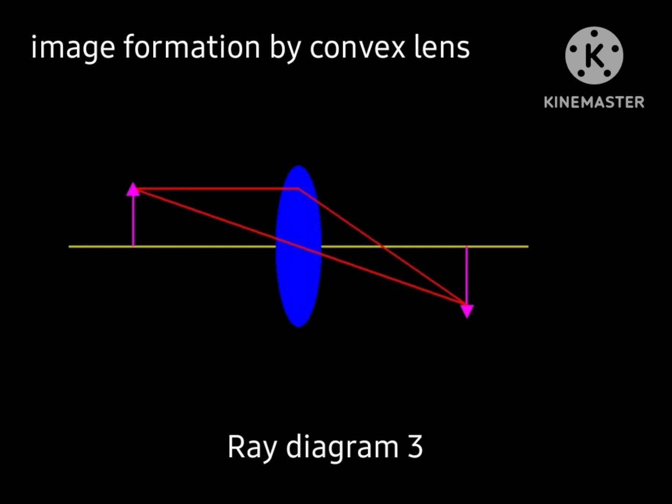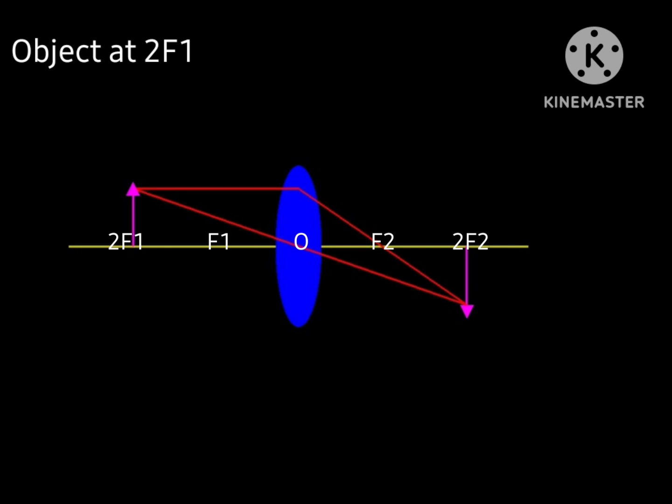In the third ray diagram we are going to discuss, the object is at 2F1. If the object is at 2F1, image is formed at 2F2.